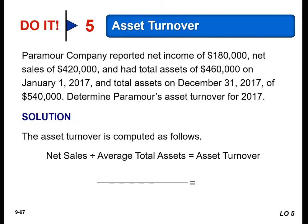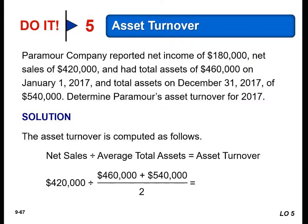Let's look at asset turnover for Paramore Company, who reported net income of $180,000, net sales of $420,000, and had total assets of $460,000 on January 1, 2017, and total assets of $540,000 on December 31, 2017. We want to determine Paramore's asset turnover for 2017. The formula is net sales divided by average total assets. Net sales is $420,000. We add total assets of $460,000 and $540,000 together and divide by two to get average total assets, giving us an asset turnover of 0.84.